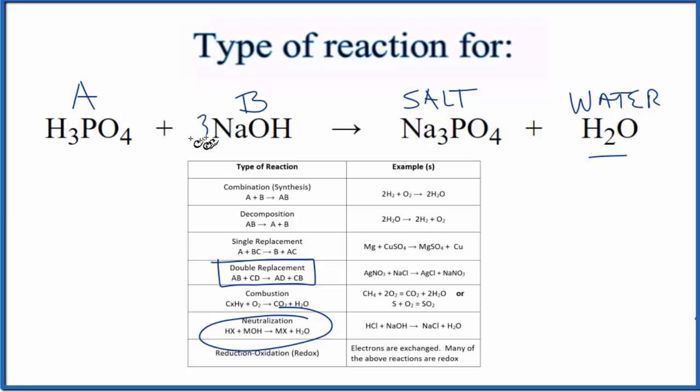Looks like we need three and then three, so now the equation's balanced. The type of reaction for H3PO4 plus NaOH is double displacement and neutralization. This is Dr. B, thanks for watching.